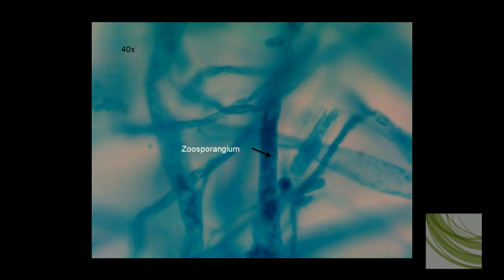This slide we've zoomed in using the 40X objective so we can see a zoosporangium, which will produce zoospores, which is the asexual part of reproduction. This wraps up my discussion of saprolegnia.